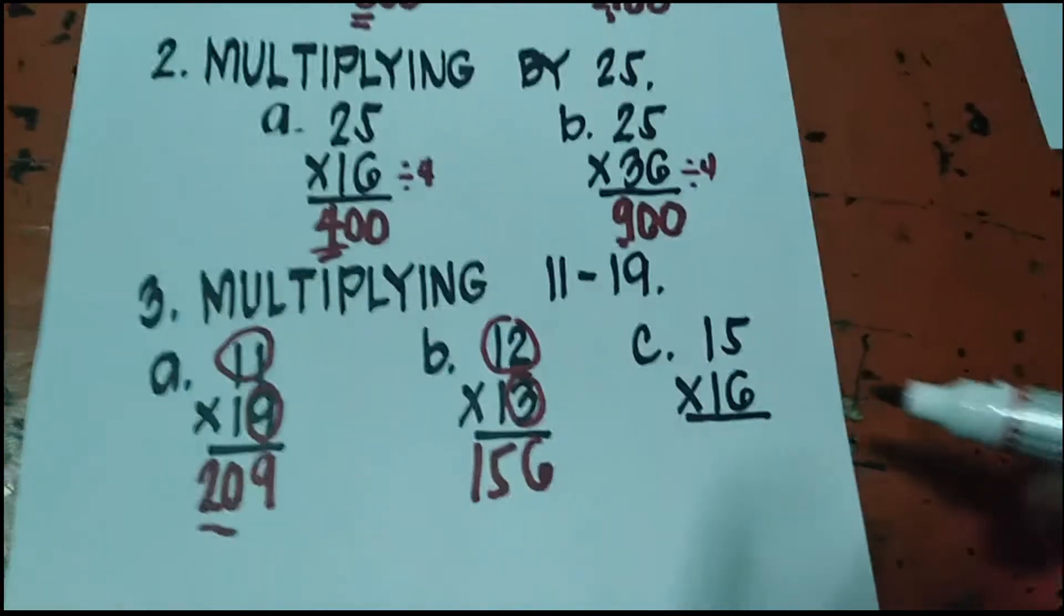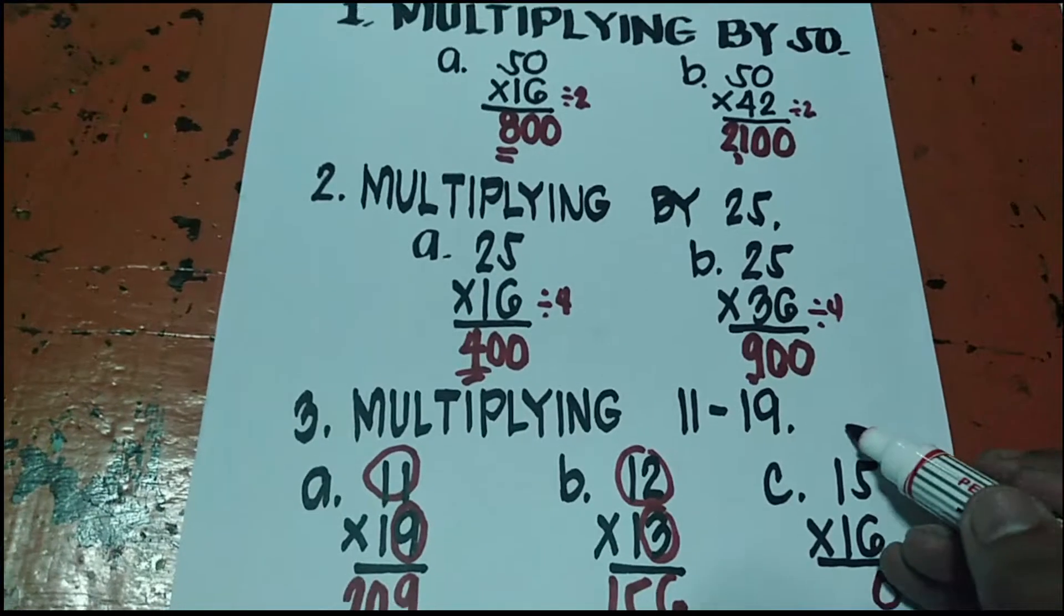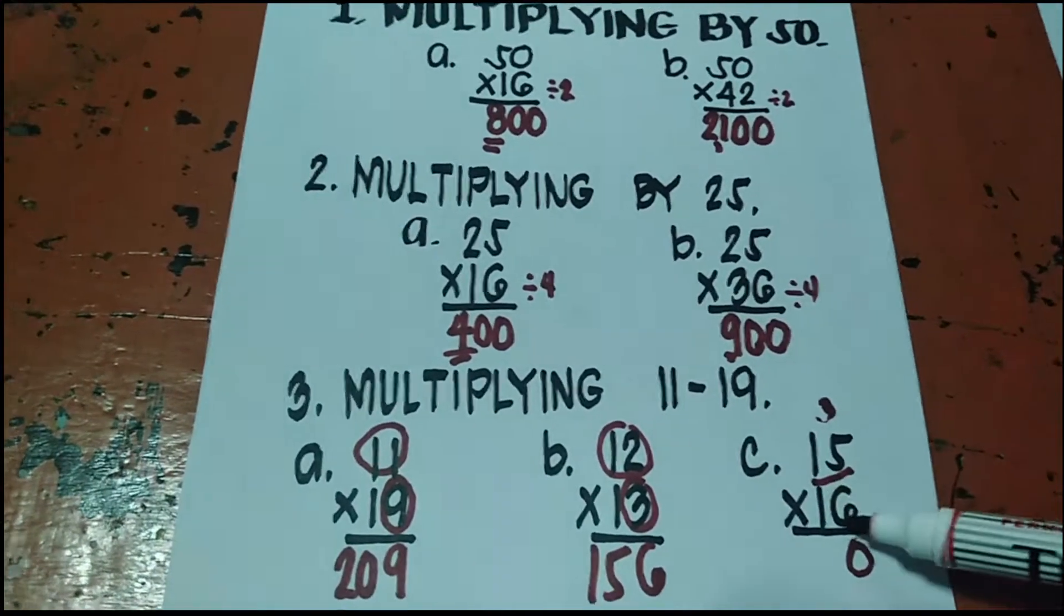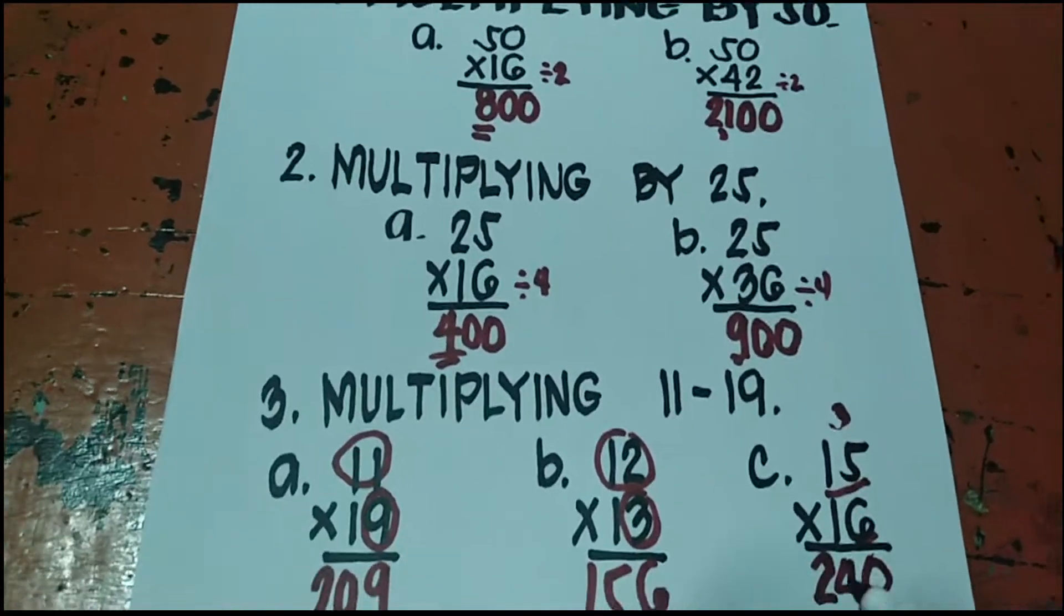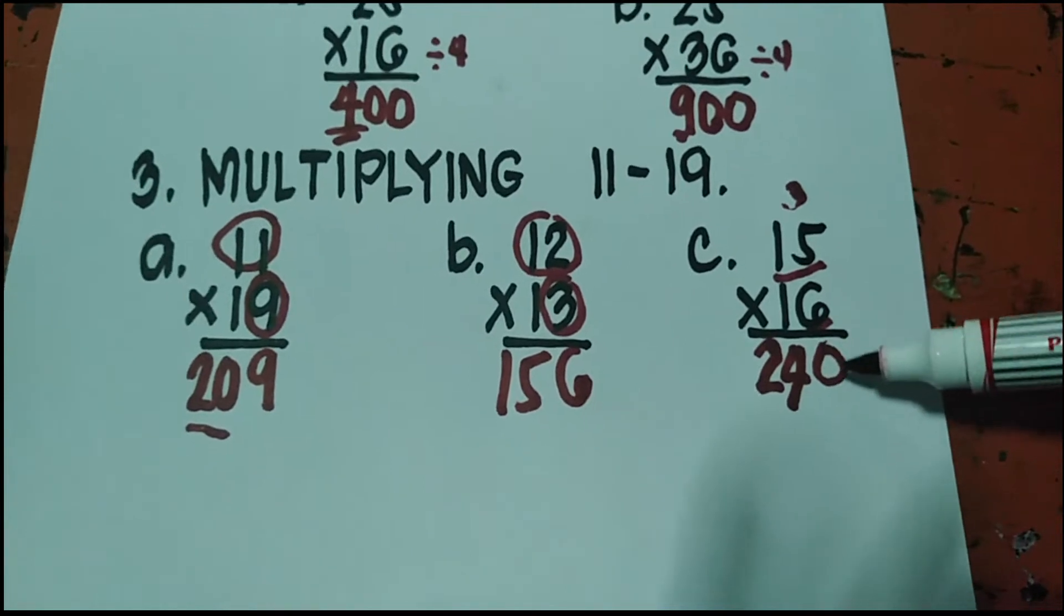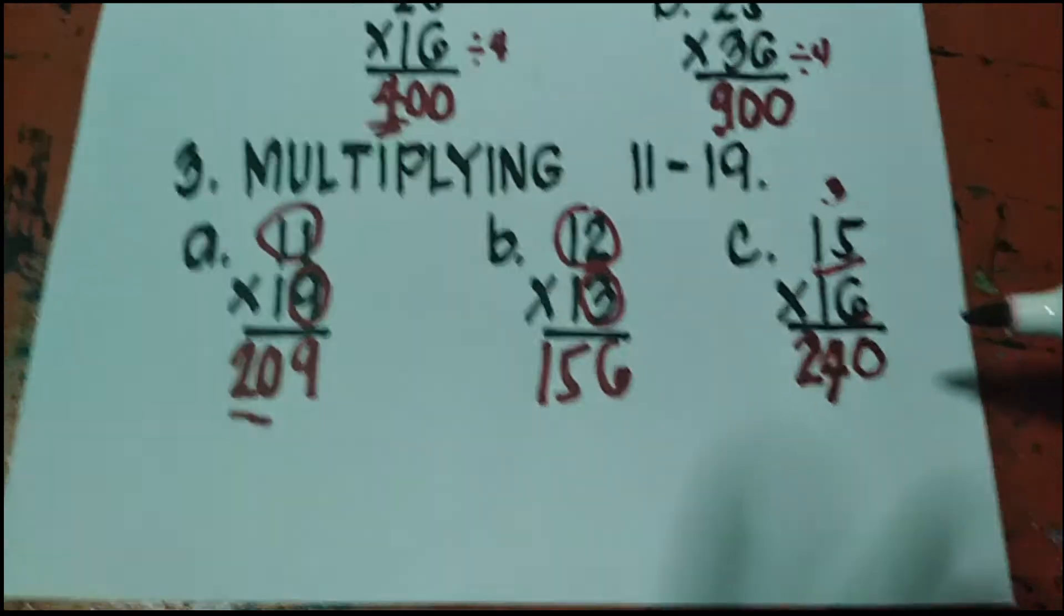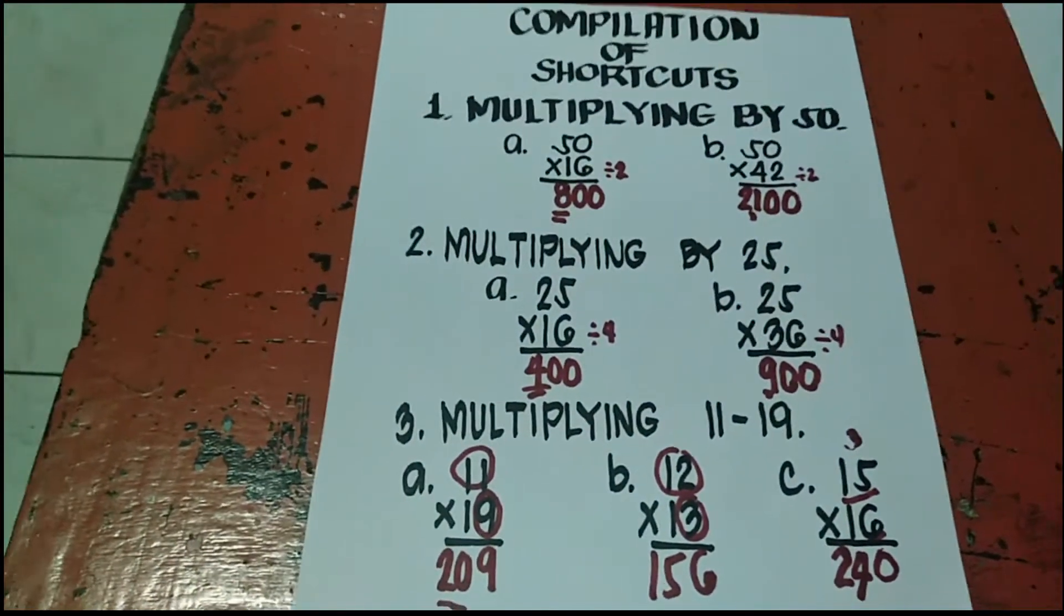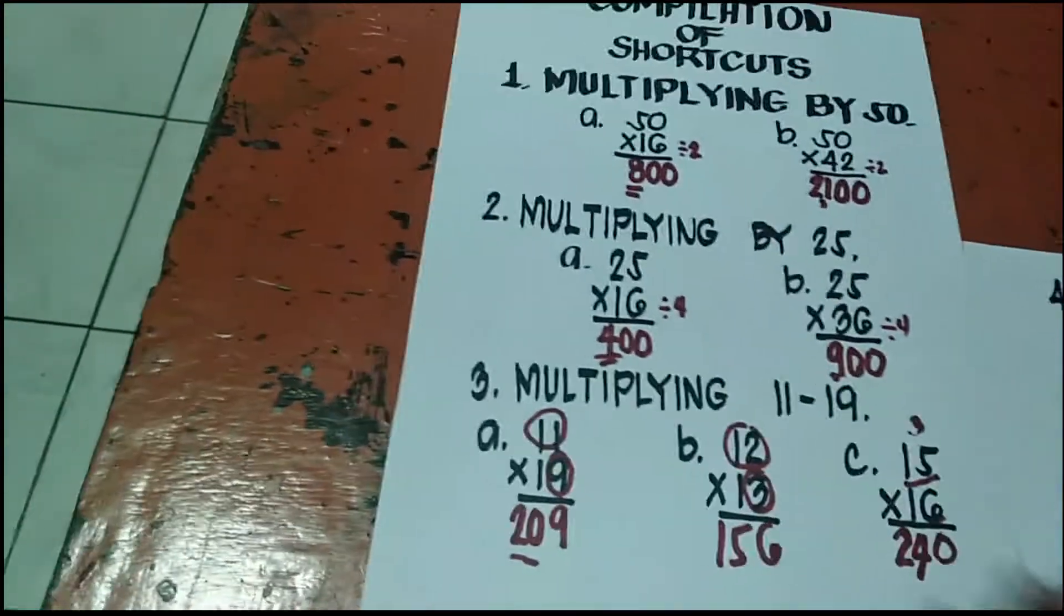Shortcut na shortcut. Next is, paano ito pag may carry? 15 times 16. 5 times 6 is 30. So yung 0, talagay natin yung carry 3 sa taas. Ganun pa rin, i-add mo yan. 15 plus 6 is 21, plus 3 is 24. Yung answer, 240. Balitin natin. 5 times 6 is 30. So 0, carry 3. Then 15 plus 6 is 21, plus yung carry na 3. So 240. I-pass mo lang yung carry. Napakadali. So yan yung tatlo: multiplying by 50, multiplying by 25, multiplying 11 to 19.